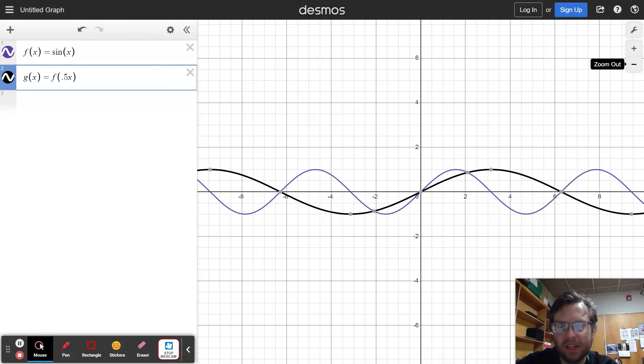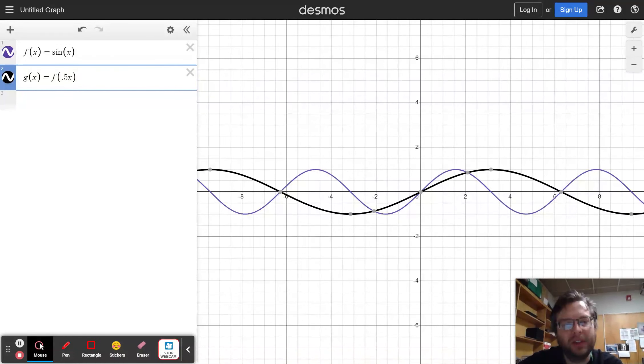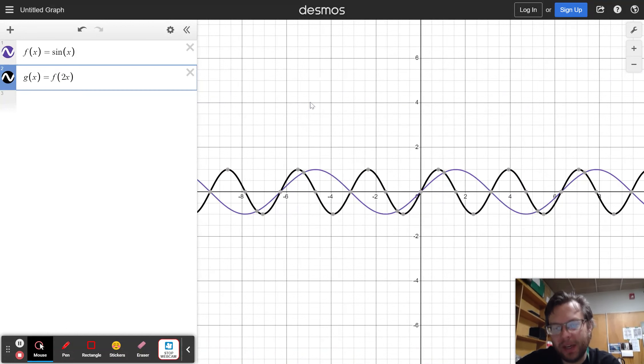Sine of x is a nice function for this because it has what's called a period, where it's how long does it take to do a full wavelength. And when I multiply by 0.5, that means that I'm completing half of a wavelength on my black curve, half of a wavelength in the time that it takes my purple curve to complete a whole wavelength. If I change that horizontal dilation to a 2, now my black curve completes two full wavelengths in the time that it takes my purple curve to complete one.